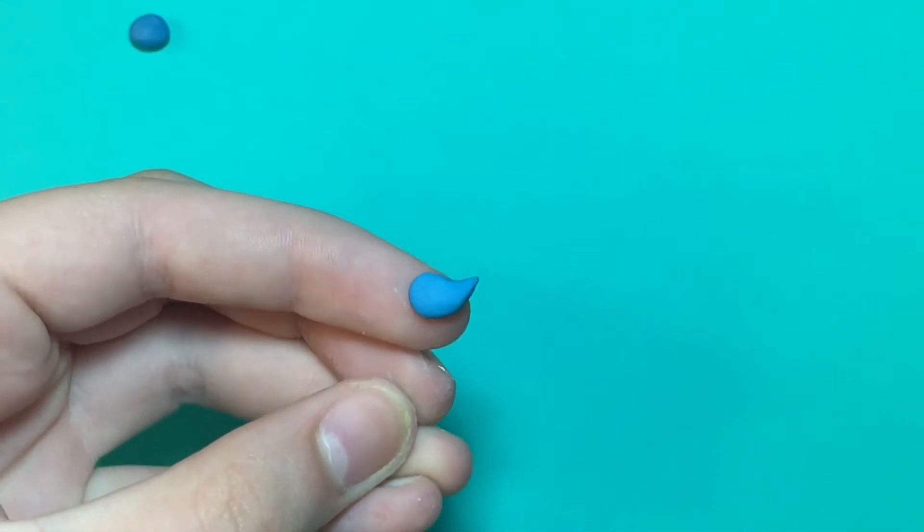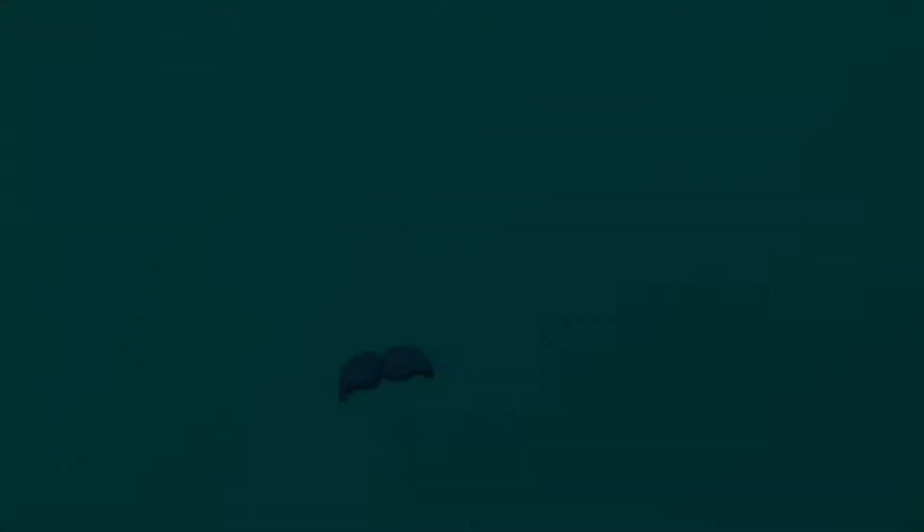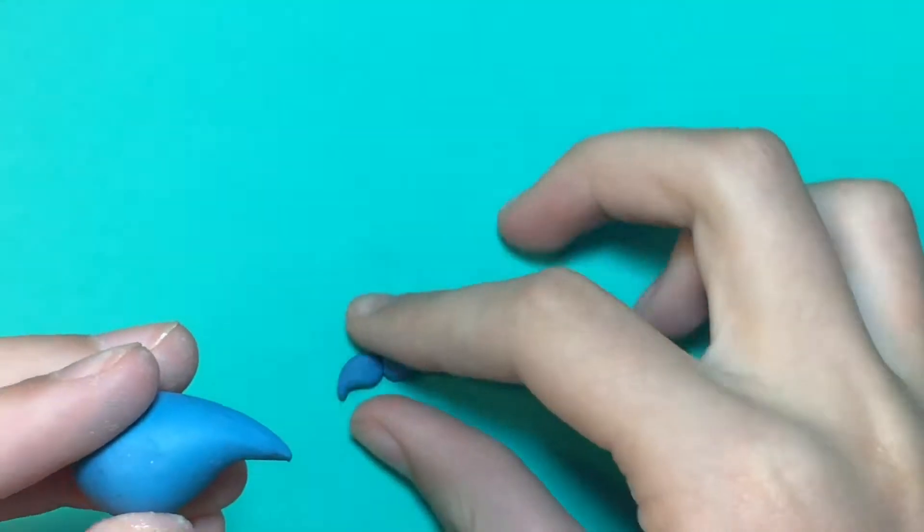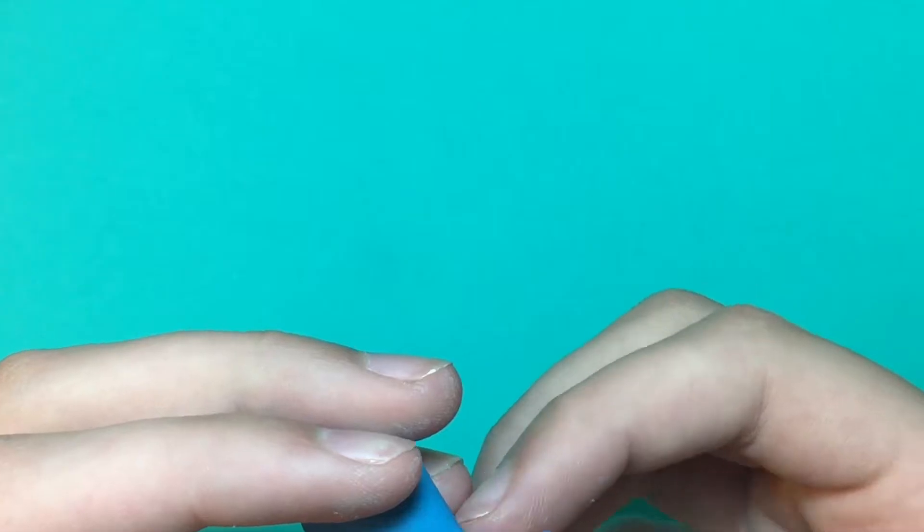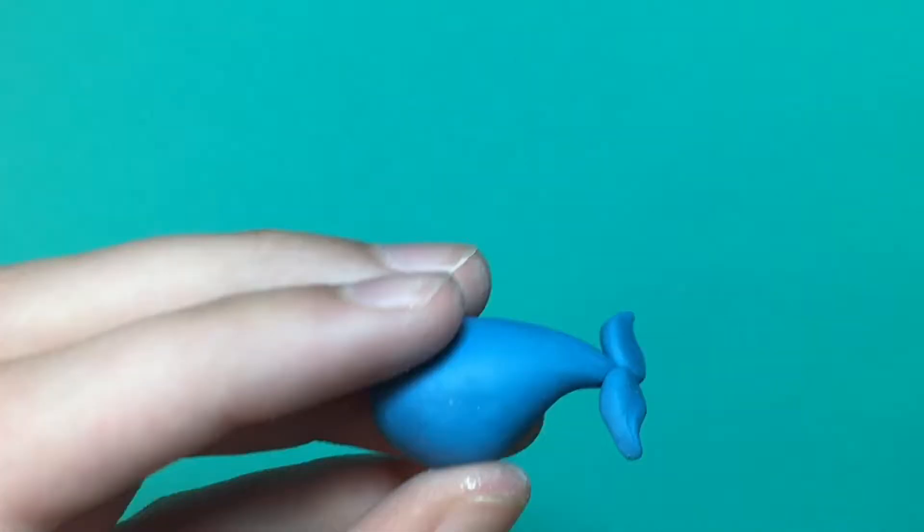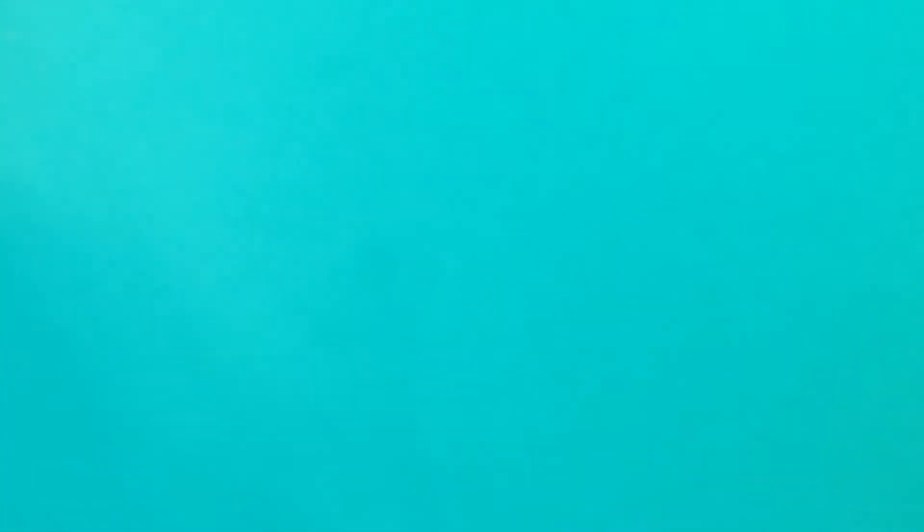Once you put both sides together, it should look like an upside down mustache and you want to place that on the end of your tail that you just created. Then I blended it in with a safety pin.